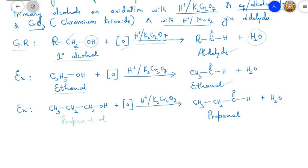In an examination, if they ask how to prepare aldehydes from alcohols, you write this example and explain in one sentence: propan-1-ol when treated with acidified K₂Cr₂O₇ gives propanal.